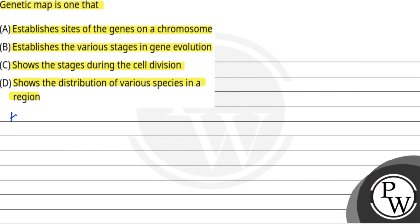The key concept for this question is we need to know what is a genetic map. A genetic map is also called a linkage map.